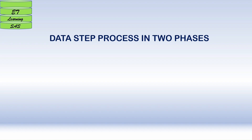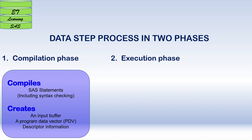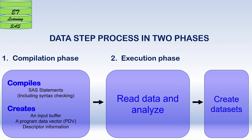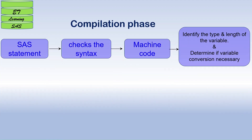In the previous example I showed how raw data is read through SAS programming and output is generated. This data processing happens in two phases: first, the compilation phase, and second, the execution phase. The compilation phase compiles the dataset, checks for syntax errors, and creates three important parts: an input buffer, a program data vector (PDV), and descriptor information. All these steps happen in memory in the background. In the execution phase, data is read and analyzed, and the final dataset is created.